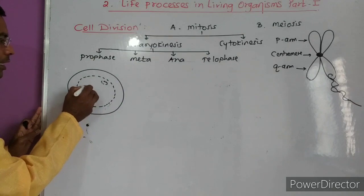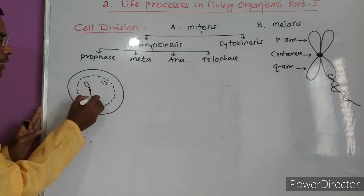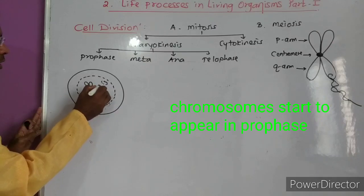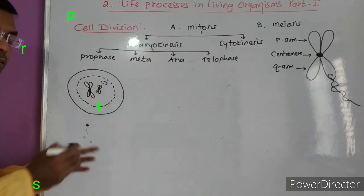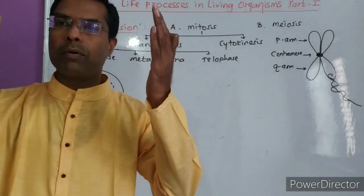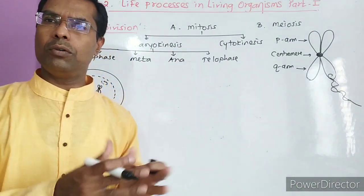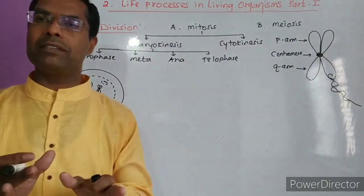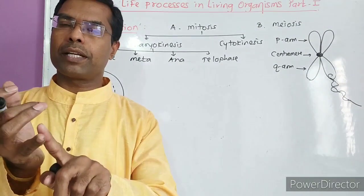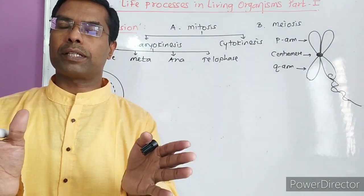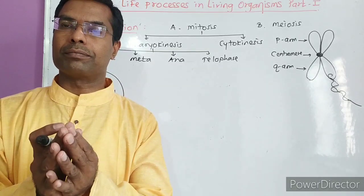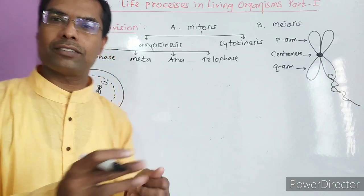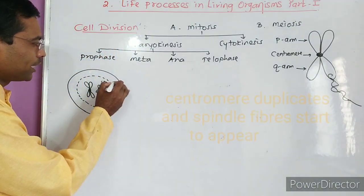Let me indicate this with the help of a diagram. Here is a chromosome, and here is another chromosome. How many are there in a human cell? 46 chromosomes. I am just taking two for example. This is prophase. What happens in prophase? Nuclear membrane and nucleolus start to disappear. Chromosomes thicken. The DNA and protein condense to form chromosomes. These are the changes. And the centromere duplicates.